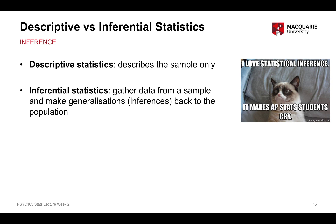Our sample has to be representative of our population. It has to have the same kinds of characteristics as the population in order for these inferences or generalizations that we make to be appropriate and valid.